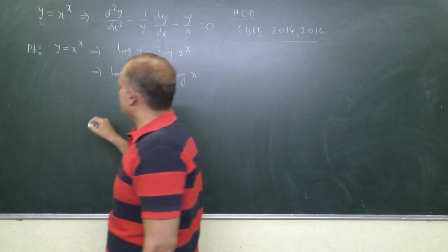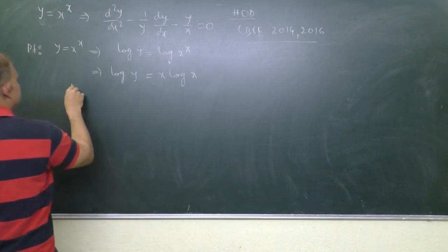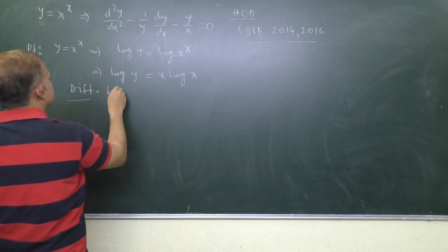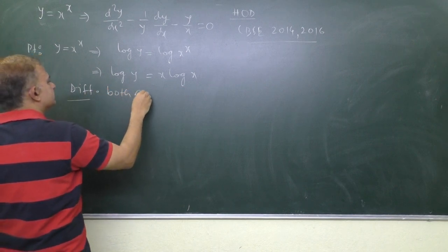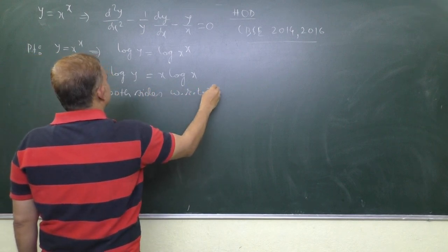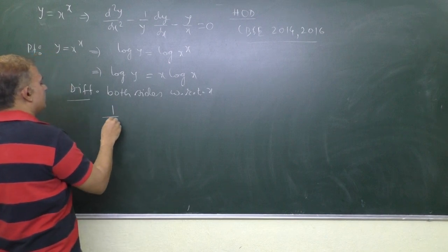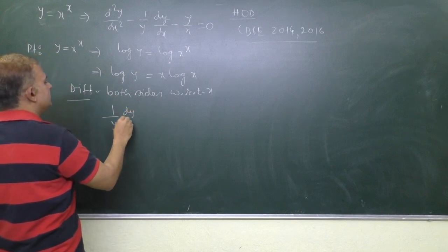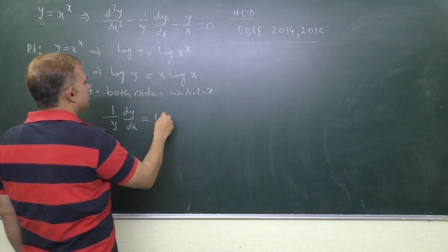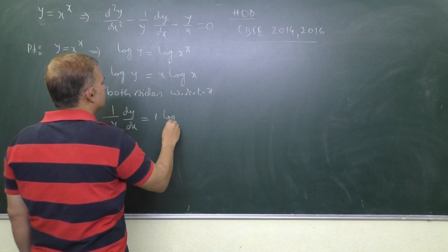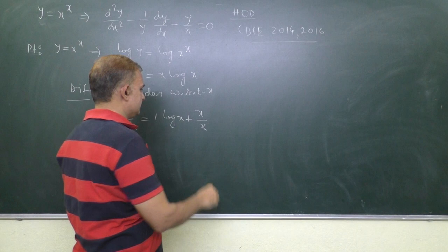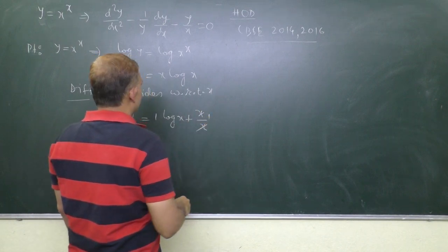Now differentiating both sides with respect to x. Differentiation of log y: 1 by y dy by dx is equal to differentiation of this. Differentiation of x times log x, using product rule: x constant, differentiation of log x is 1 by x, so it is 1.